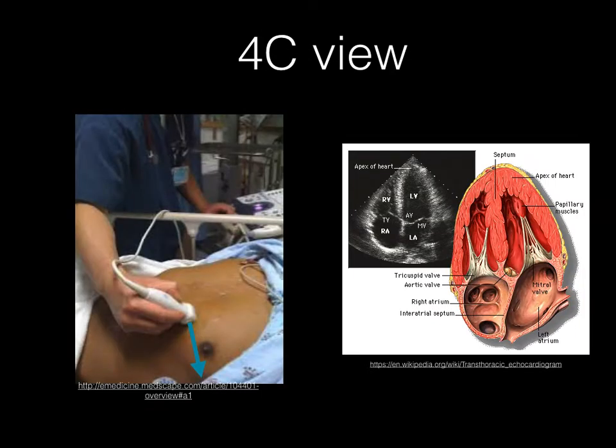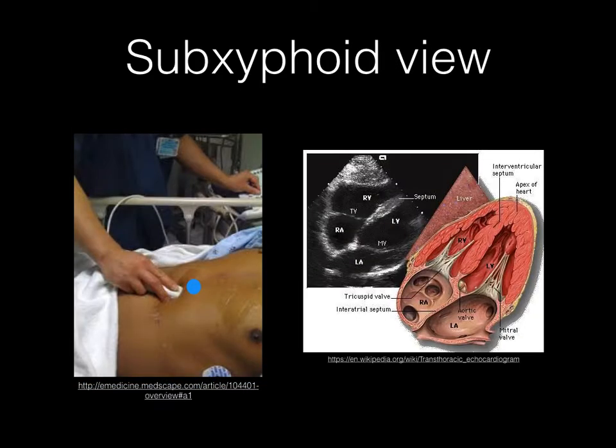The four chambers view will be generated by moving your probe towards the apex of the heart, marker pointing towards the patient's left side. Your image is going to show all four cavities, including both atria and both ventricles. The subcostal view will be generated by moving the probe just below the xiphoid process pointing towards the heart.